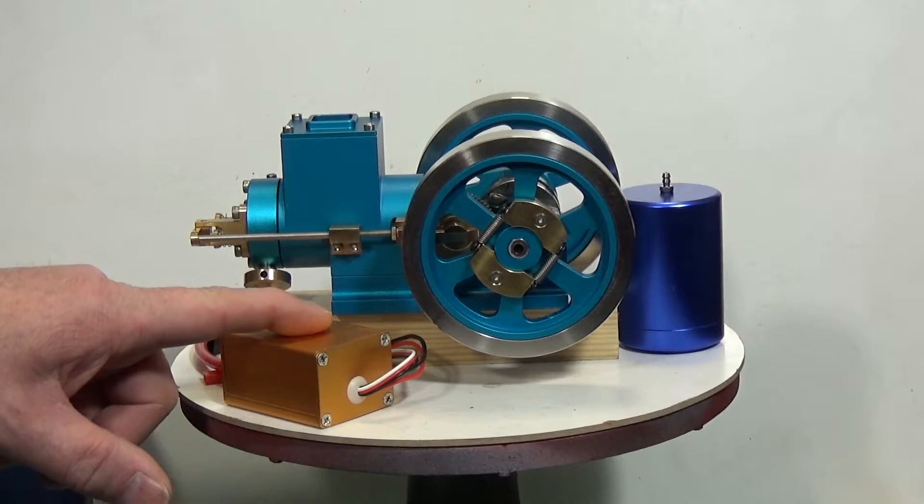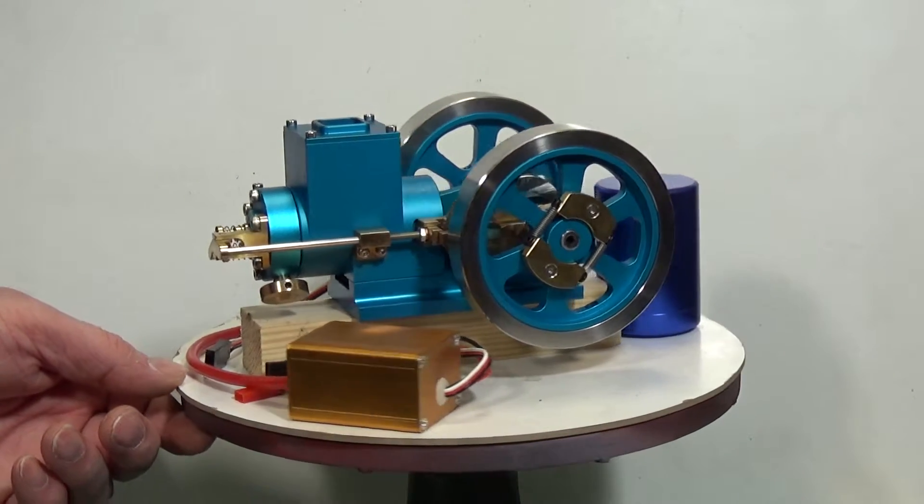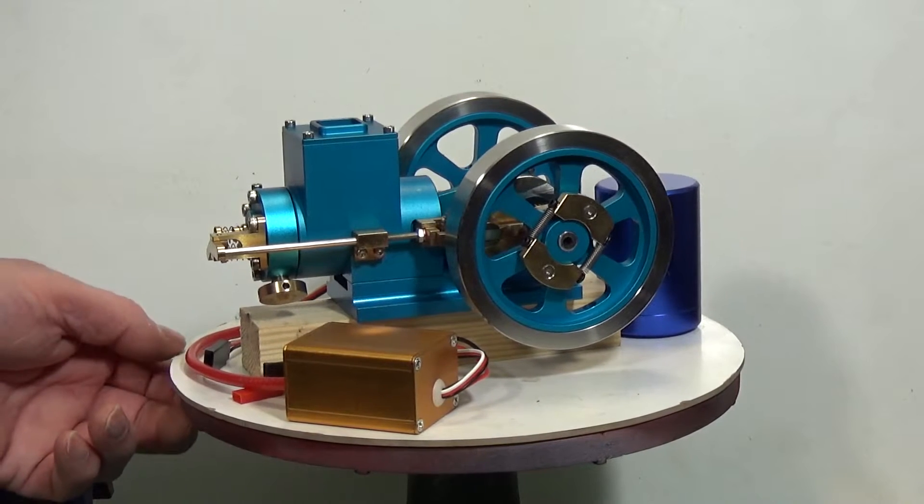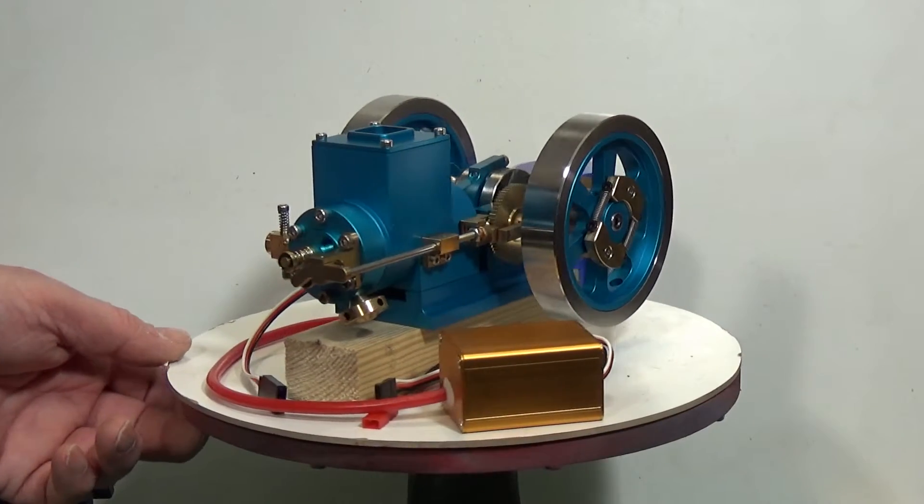The one thing you don't get is the buzz box here requires 3.7 to 4.5 volts to provide the spark. So obviously you need to provide a battery holder with, say, three double A's in to provide the power for that.